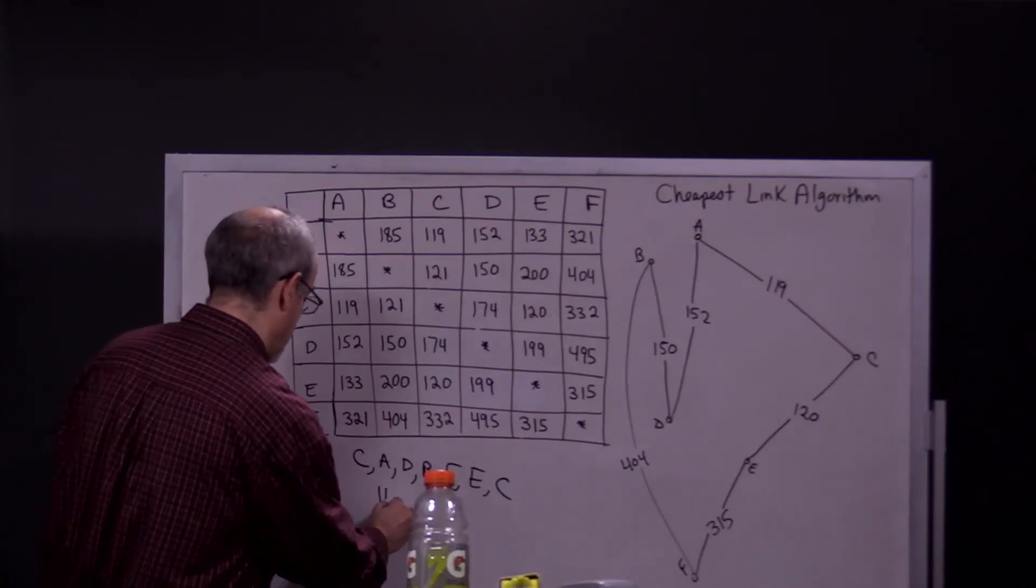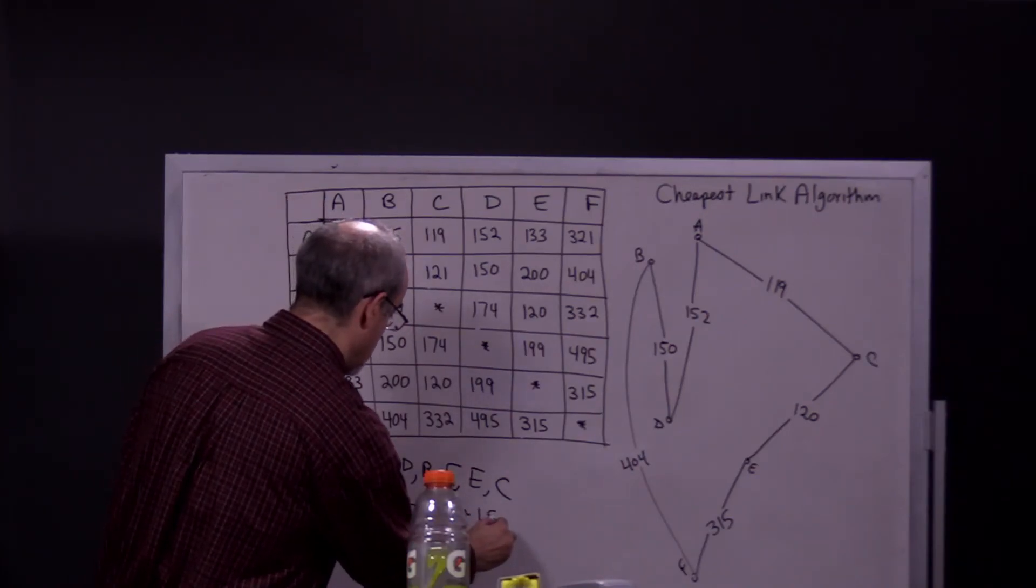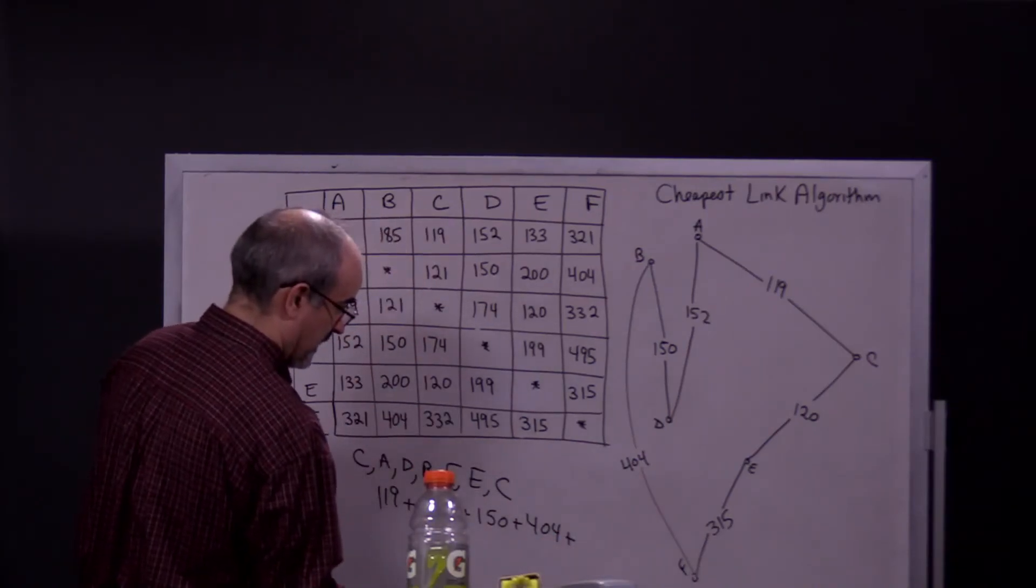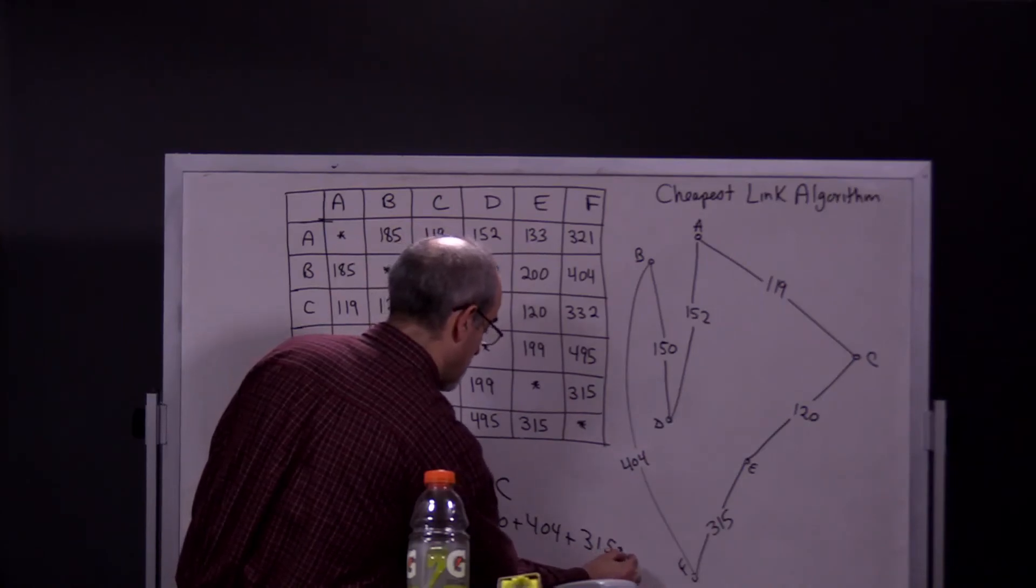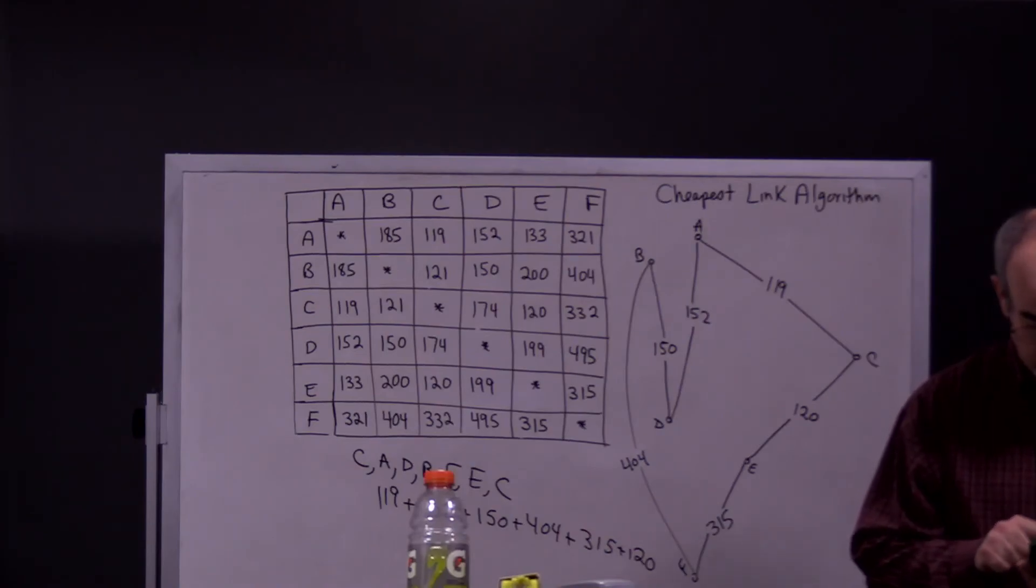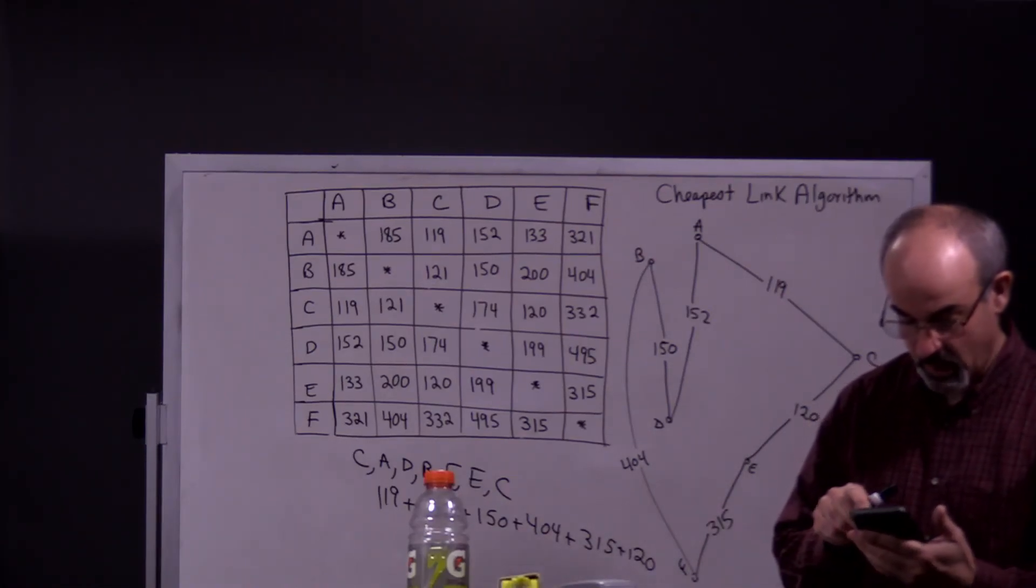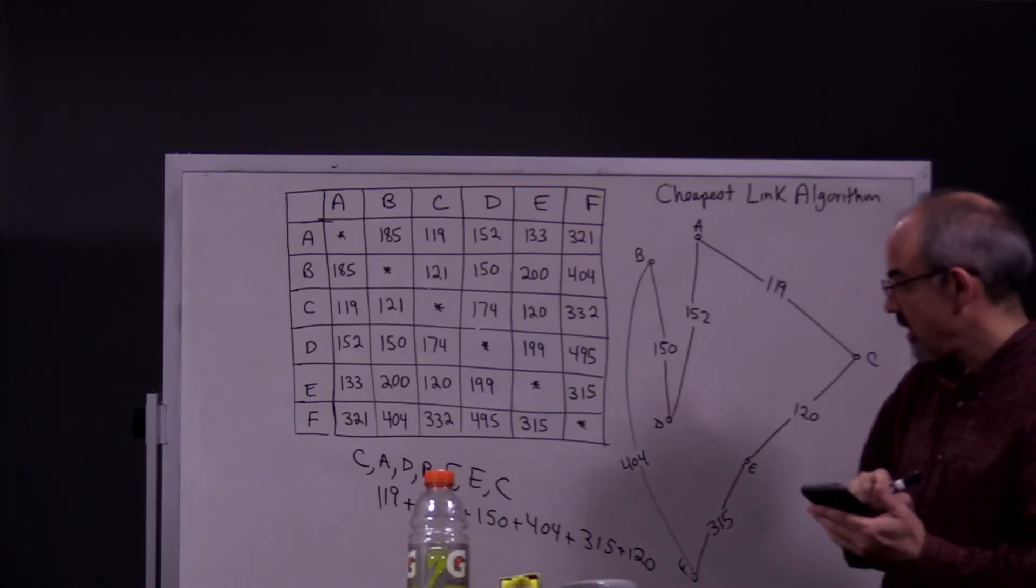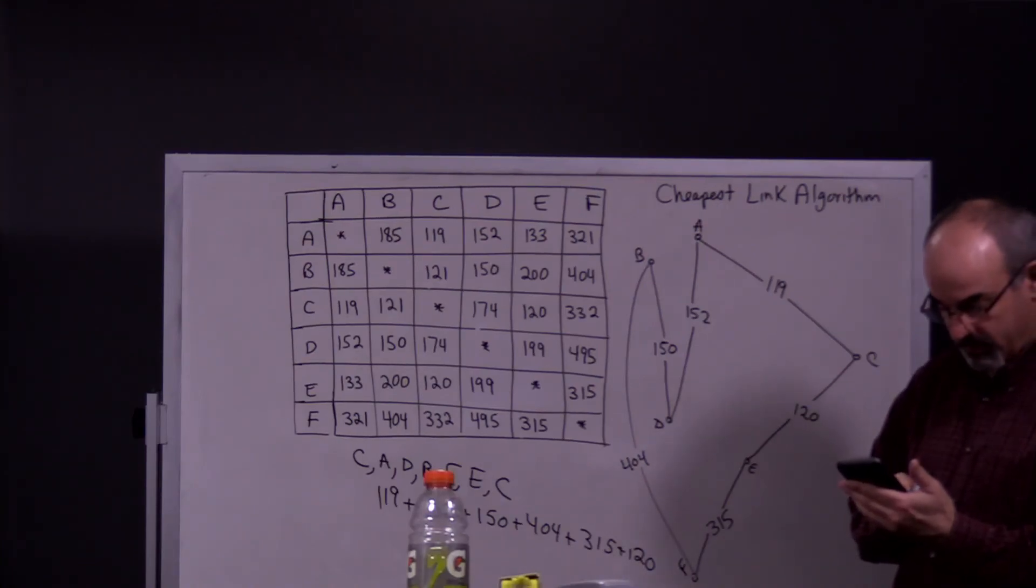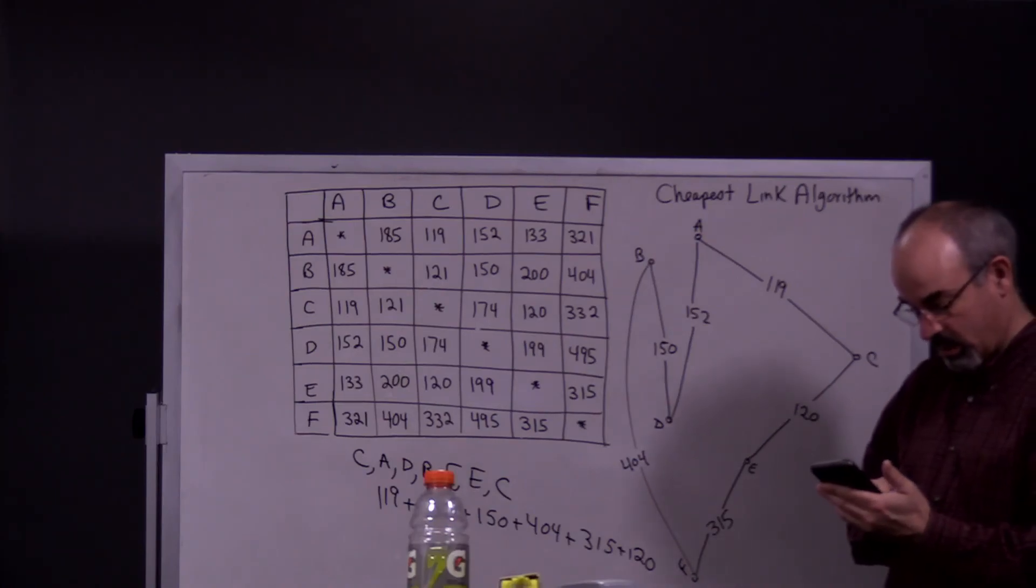C to A is 119. A to D is 152. D to B is 150. B to F is 404. F to E is 315. And then we have 120 back to C. So let's add that up. I don't remember what we got when we did the same problem using the nearest neighbor algorithm. So we have 119 plus 152 plus 150 plus 404 plus 315 plus 120. That equals 1260.